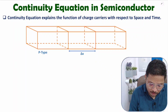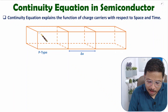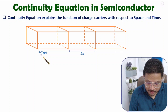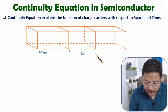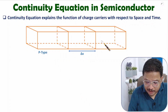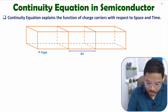Here you can observe we are having a block of p-type material. For the derivation I'll be considering a small section of width Δx. In this p-type material, the charge carriers present are holes, and the concentration over here is p.